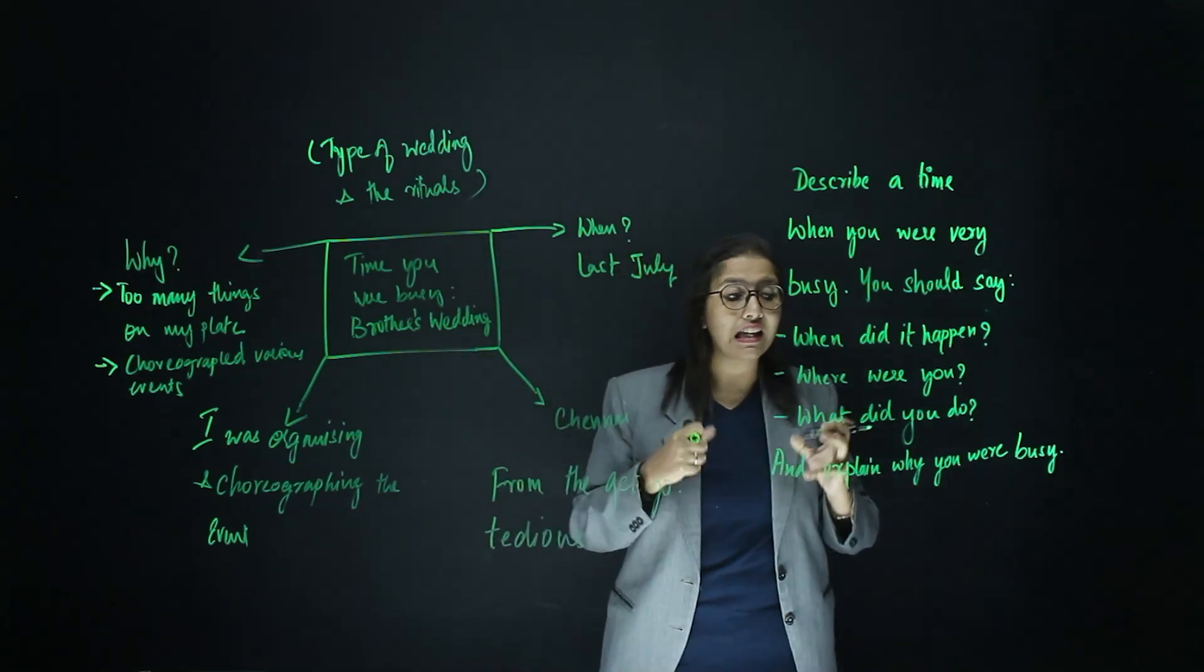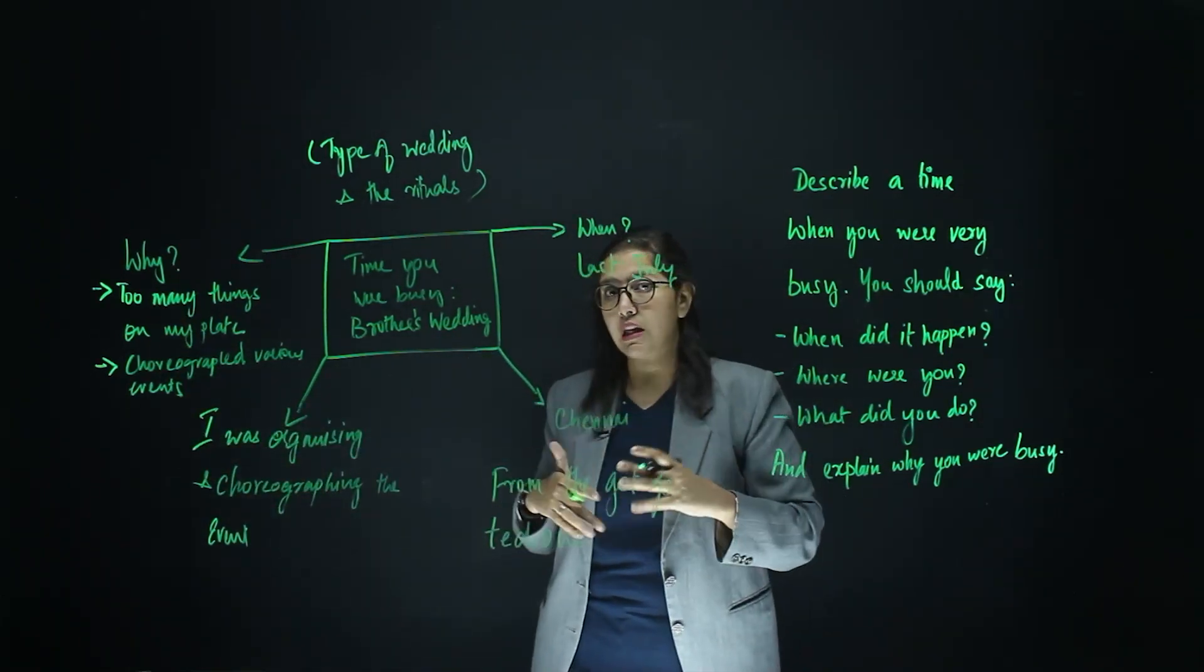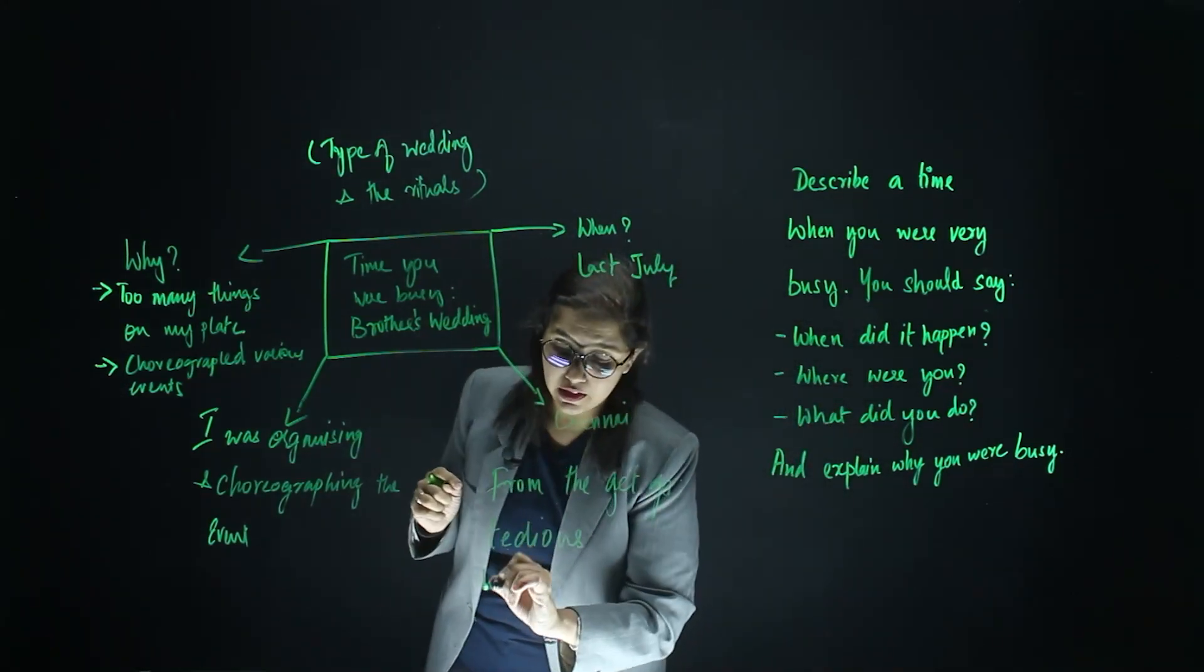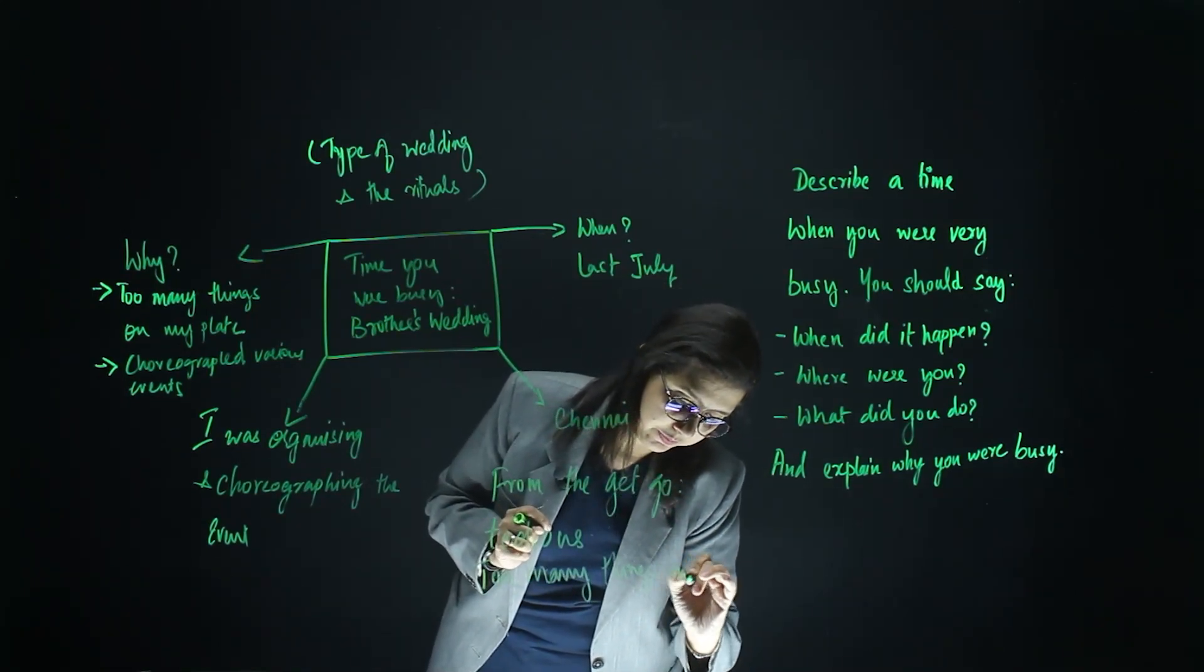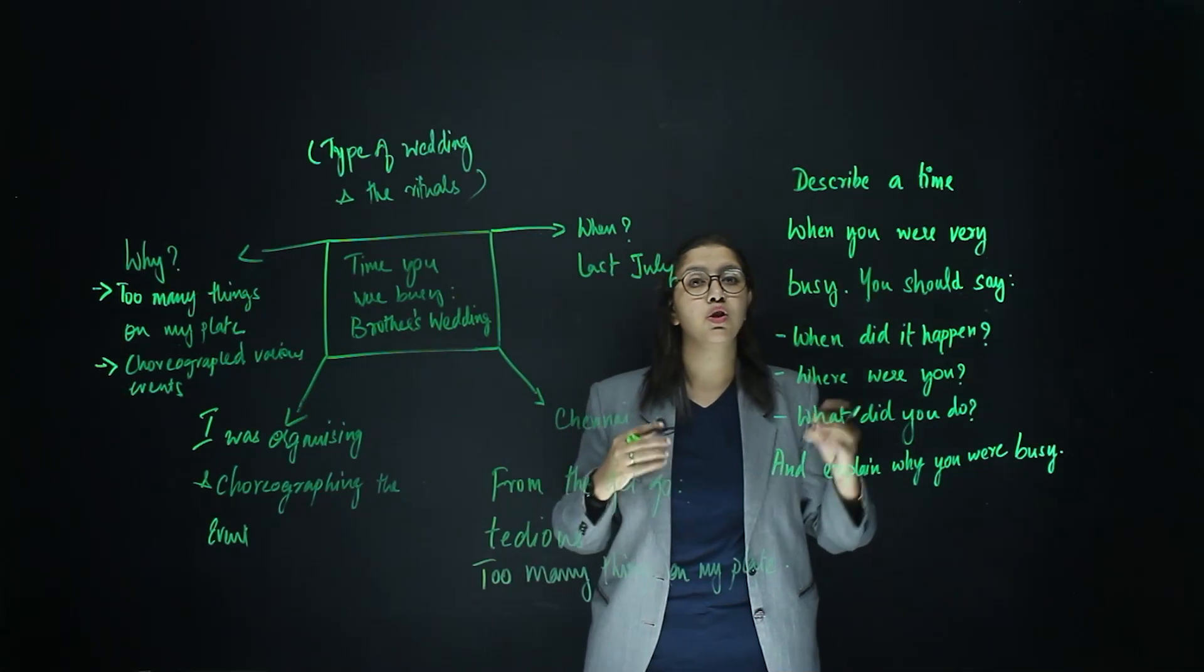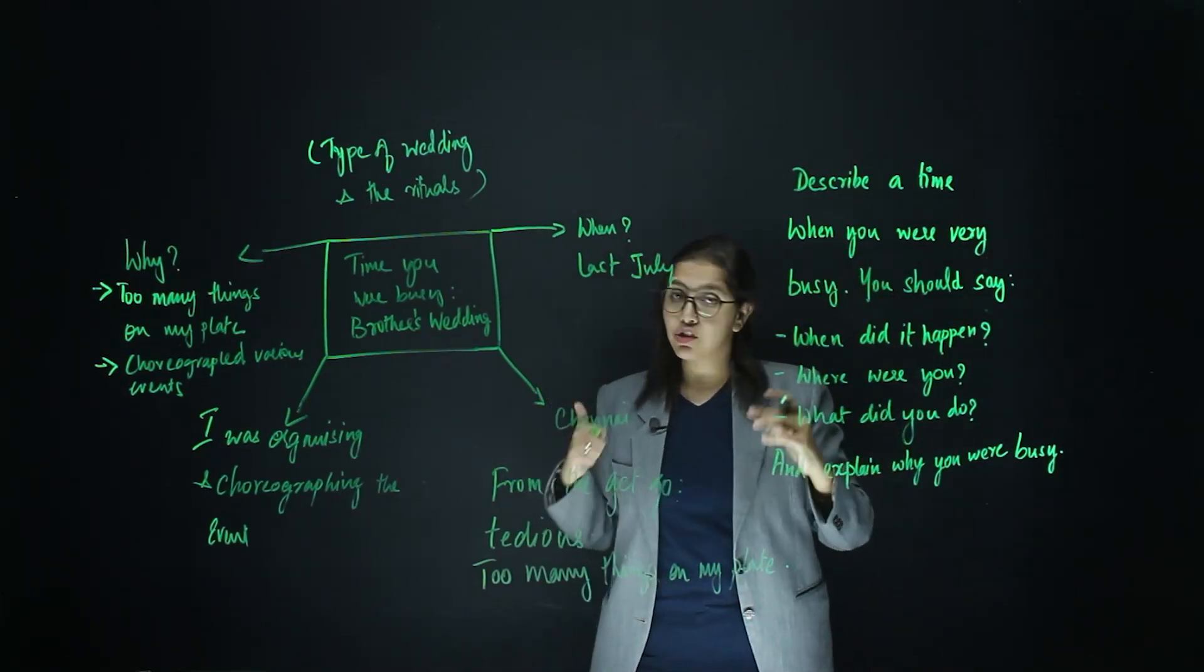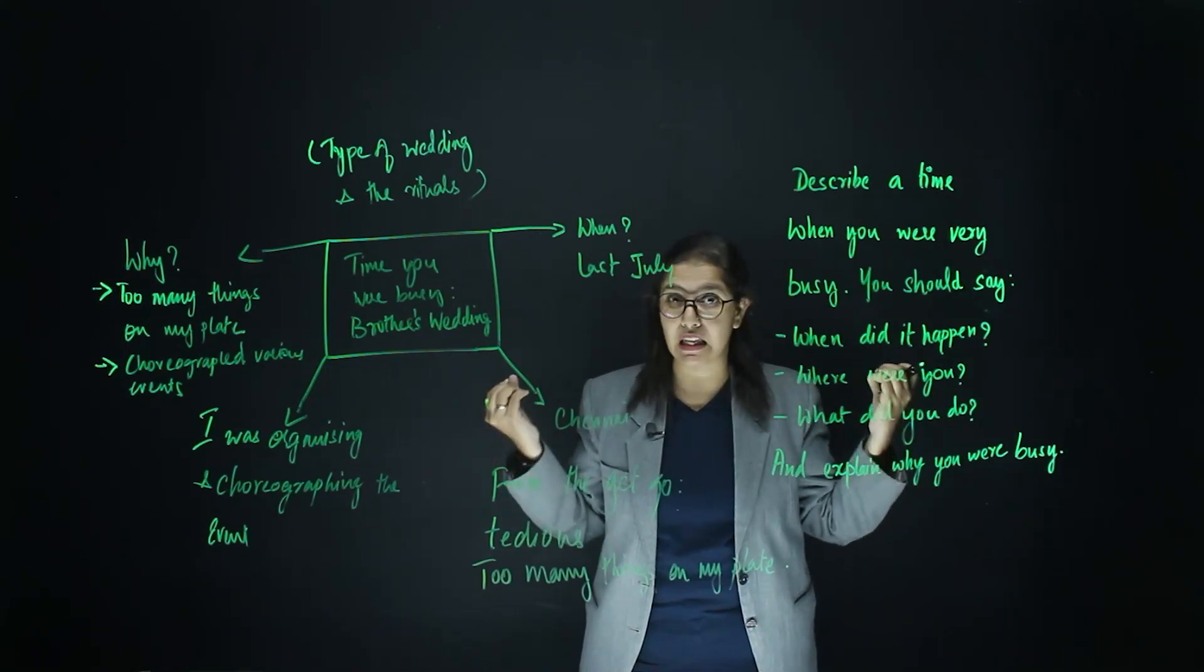Next, you are basically explaining why you are busy. Now, you notice that these two points sort of merge into each other. So, you will have to give a lot more detail. So, you can say there were too many things on my plate. Now, what does too many things on my plate mean? Basically means that you had a lot of responsibilities. And you had a lot of tasks that you had to check off your checklist. By saying too many things on your plate, you can also putting out the image that you did not have any breathing space.